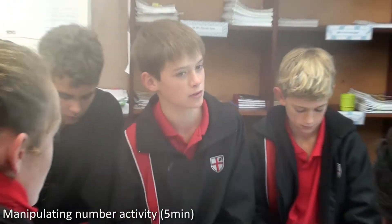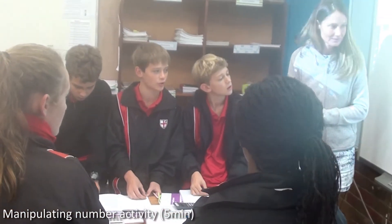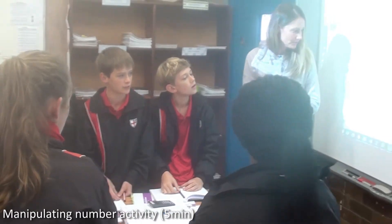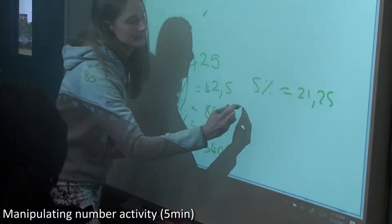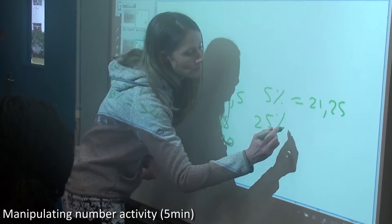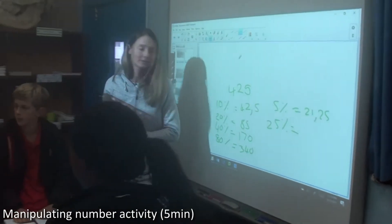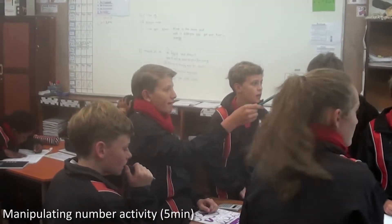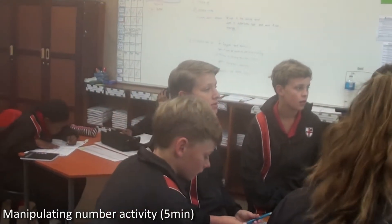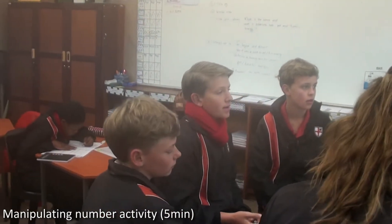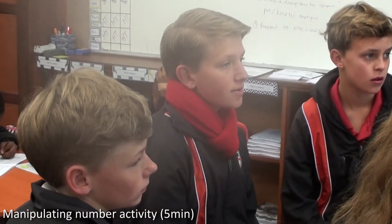And a quarter as a decimal is 0.25. Good. And if we know 5% and we know 20%, can we easily work out what 25% is? Yes. So you'll take the 5 and the 20 and you add them together. Good. So that would be 106.25.